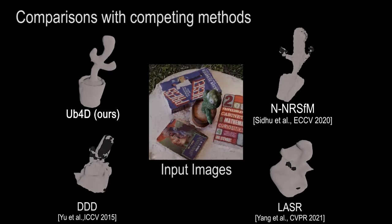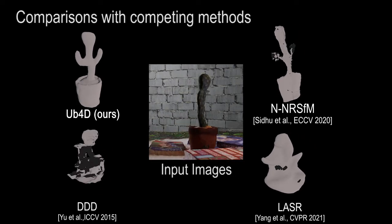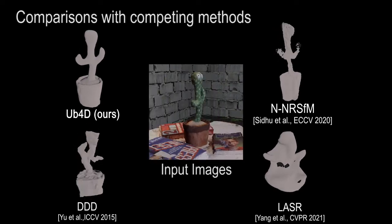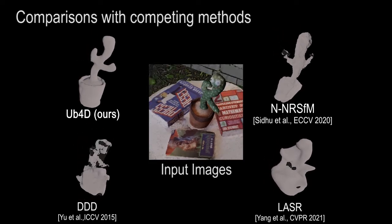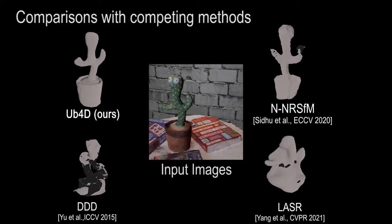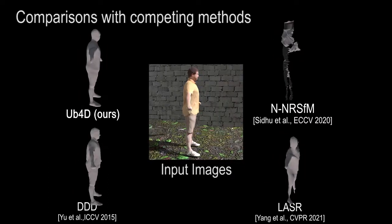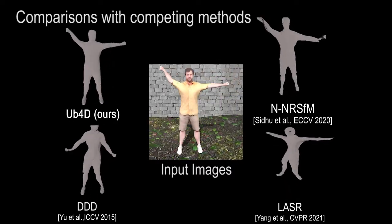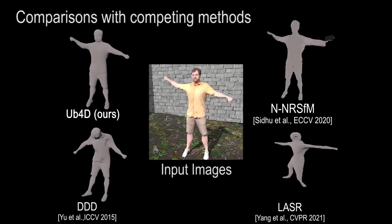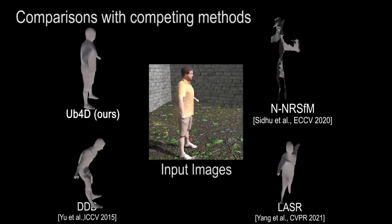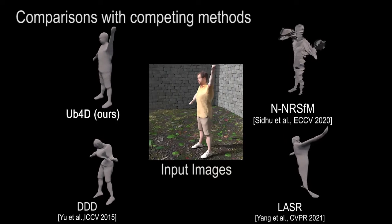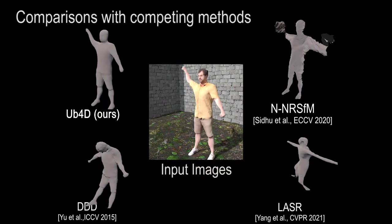Next, we compare Unbiased 4D to competing monocular non-rigid 3D reconstruction methods of different classes. Direct-Dense-Deformable, or DDD, is a template-based monocular surface tracking method. Neural NRSFM is a non-rigid structure-from-motion approach taking as input dense 2D flow fields. Finally, LASER is a learning-based 3D mesh reconstruction approach that deforms a sphere to match image observations and detects 3D joints of the observed articulated structure. Note that our method is the only one that can thoroughly reconstruct the deforming object, while others perform poorly. The observed qualitative improvement is confirmed by a quantitative study reported in the paper.